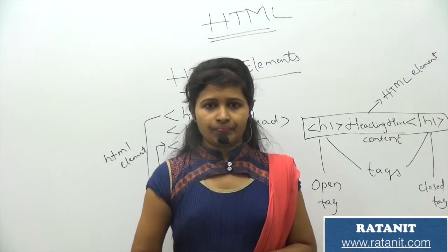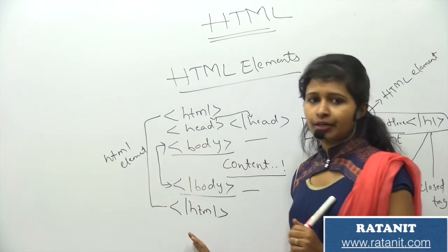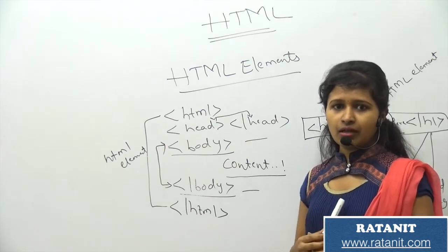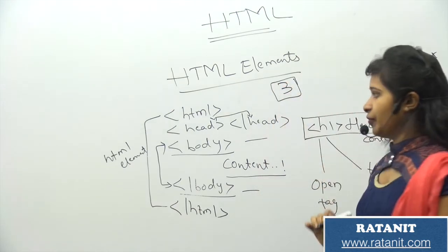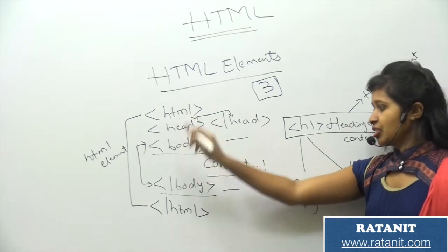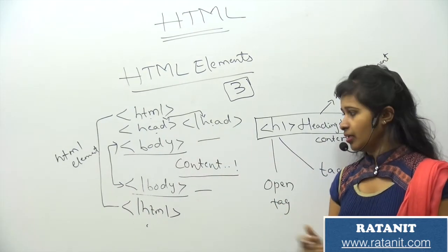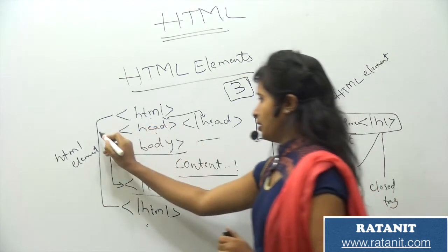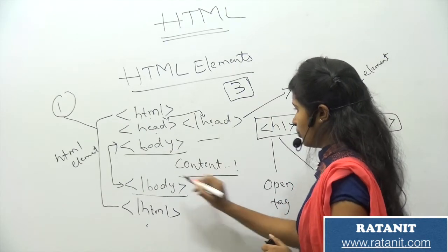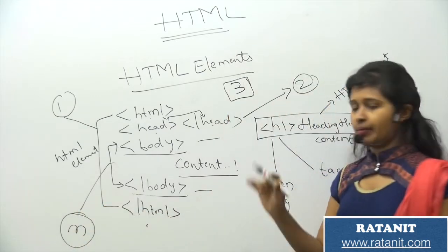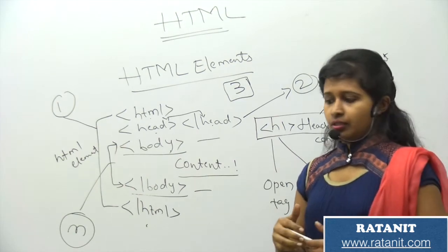Here's a question for you: in this basic structure of an HTML program, how many HTML elements are there? If your guess is three, you are right. The html-to-html is one element, head-to-head is the second element, and body-to-body is the third element. So in this basic structure, there are three HTML elements.